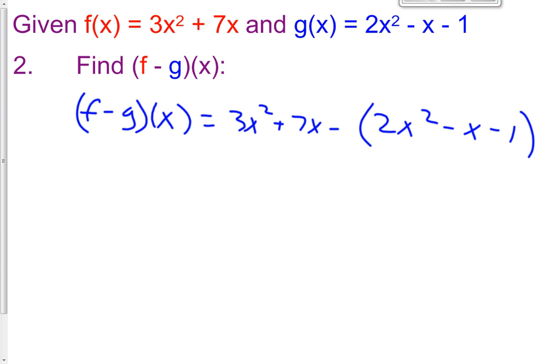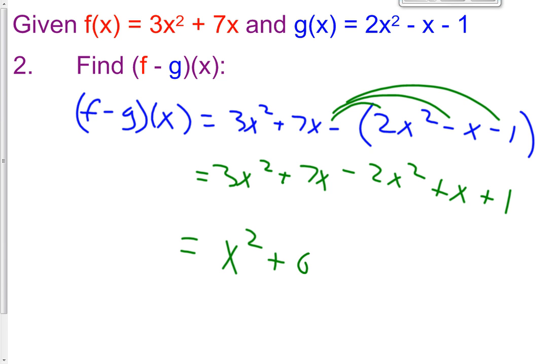So the only maybe slightly more difficult step is we have to distribute this negative sign. So now it's going to be a minus 2x squared, a positive x, and a positive 1. 3x squared plus 7x. So our answer now becomes 3x squared minus 2x squared is 1x squared. 7x plus 1x is 8x, and then we have a positive 1. That's what we get when we get f minus g of x.